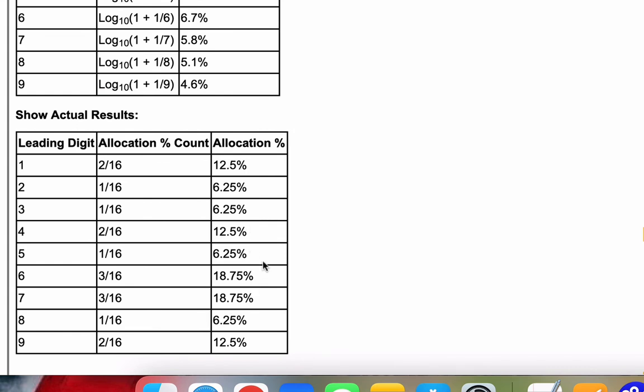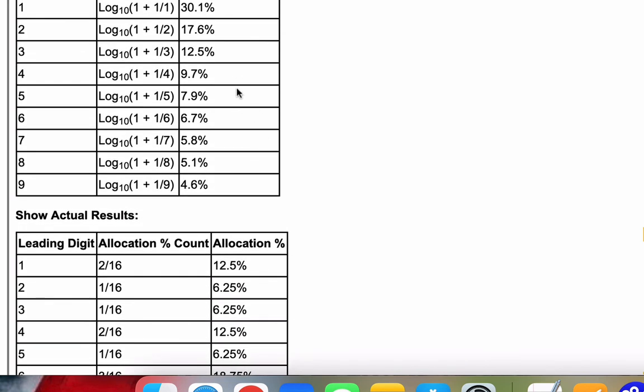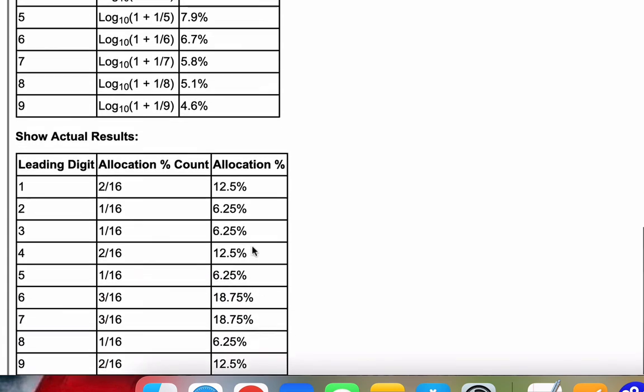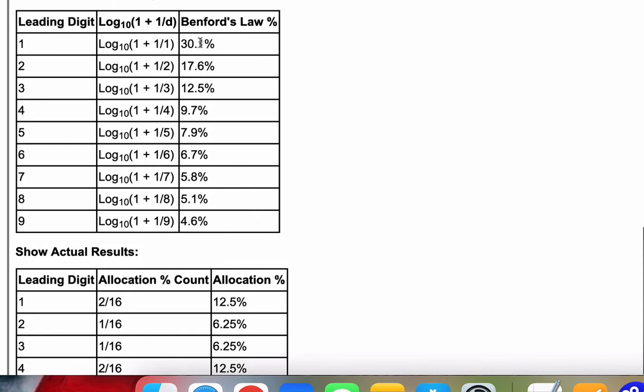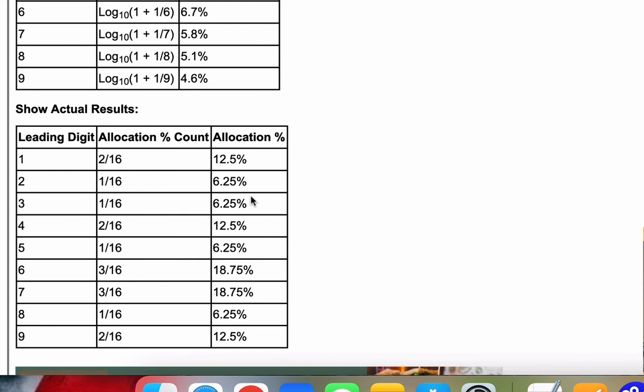This is a smaller set of numbers, but what's nice is if you bump this up, you can detect if these numbers were actually randomly generated or not. As you can see from these percentages, they don't match up anywhere near what Benford's Law should be. So it's a nice sanity check for things like fraud detection.